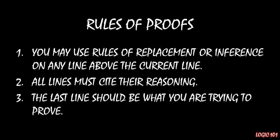Rule number two says that all lines must cite their reasoning. The purpose for this is that we want to make sure that we're correct in what we're doing — that we're getting from point A to point B in a logically valid manner — and we want to make sure that our results are replicable. Someone should be able to pick up our proof later on and understand how we go from point A to point B to point C. If we're not citing our reasoning as we go through, we're interfering with the replication process.